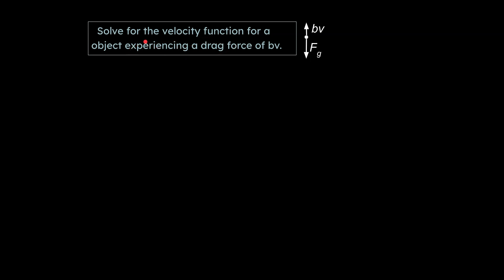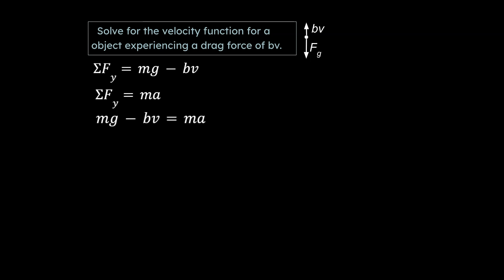Let's go back to the question: solve for the velocity function for an object experiencing a drag force of bv. This is in a more general sense — not just terminal velocity, but any speed. We're going to set up the sum of the forces strategy again in the y-axis and set these equal to each other. At this point we have three constants — m, g, and b — but we want to pay special attention to v and a, because both are important unknowns. Since we have two unknowns, it's preferable to reduce them to one.